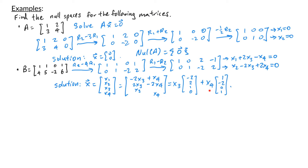Since x3 and x4 can be any real number, the solution consists of all linear combinations of the vectors (-2, 2, 1, 0) and (1, -2, 0, 1). Therefore the null space of B is the span of {(-2, 2, 1, 0), (1, -2, 0, 1)}. If B were used in a matrix transformation, that transformation would not be one-to-one because the null space contains more than just the zero vector.